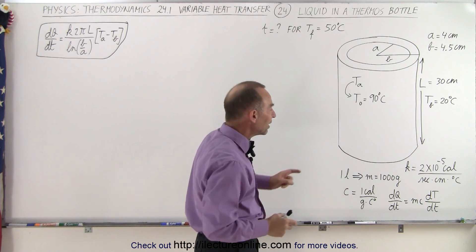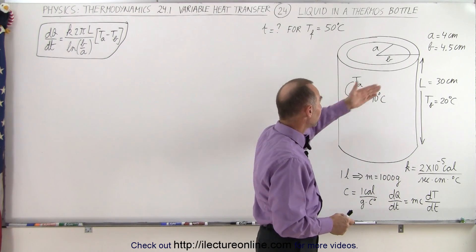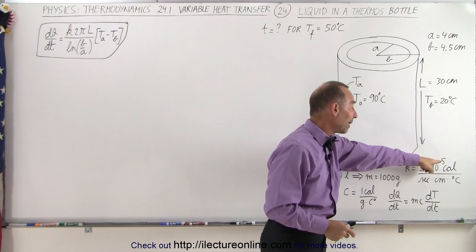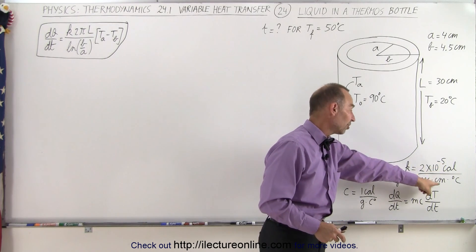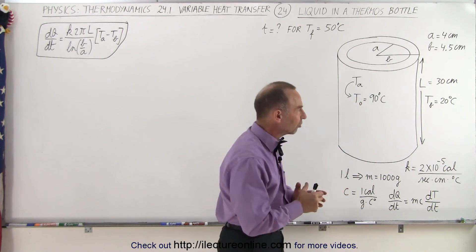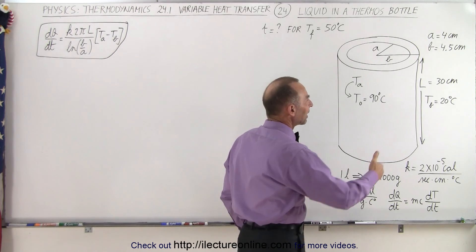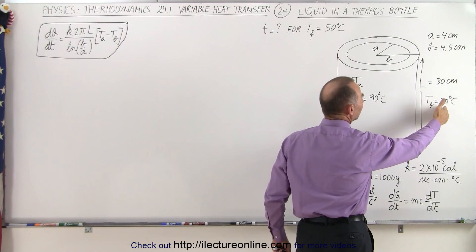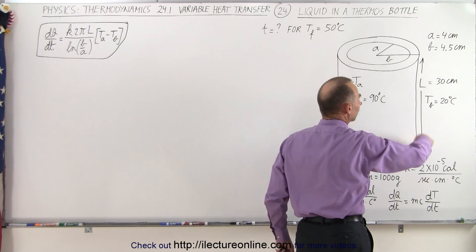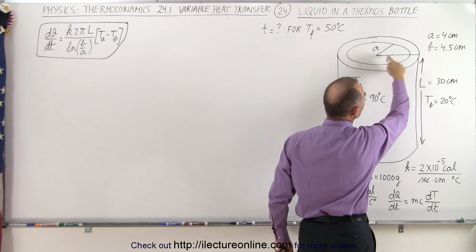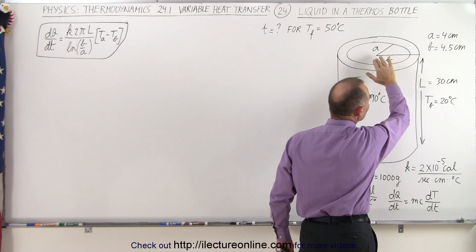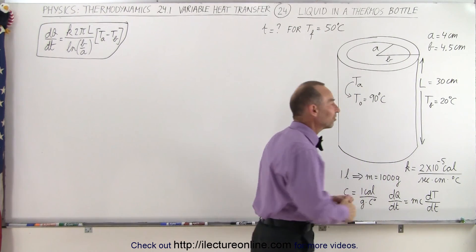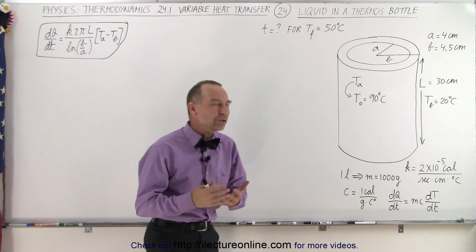The conductivity constant for the insulation around the thermos bottle is 2 times 10 to the minus 5 calories per second per centimeter per degree centigrade, so it's a good insulator. The outside temperature is at 20 degrees centigrade, about room temperature. The height of the bottle is 30 centimeters, and the inner radius and outer radius are four and four and a half centimeters. So how do we do that?